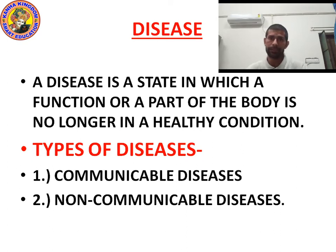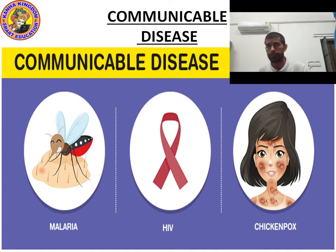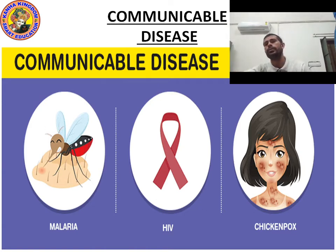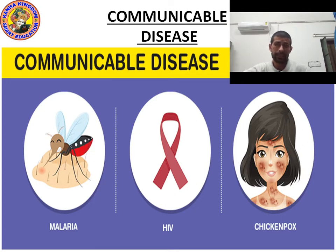Now let's begin communicable diseases. As you can see some pictures on the screen showing communicable diseases: the first picture is malaria, the second is HIV, and the third is chickenpox. In your book, only malaria is given, so we will study about malaria. HIV and chickenpox are not in the book, but remember they are very dangerous diseases.